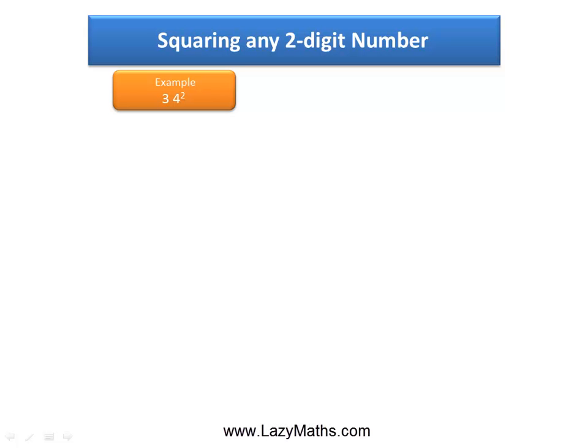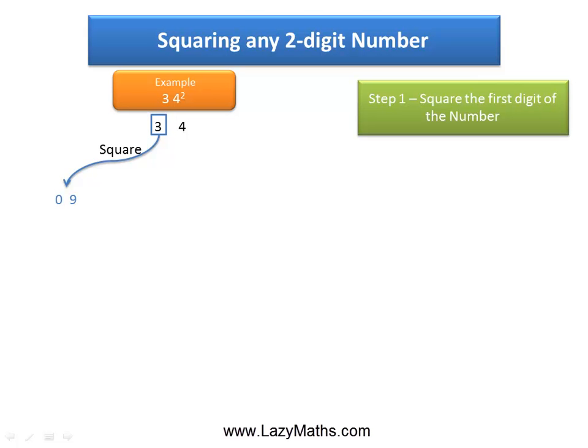Here's another example of squaring a two-digit number: 34 squared. The first step is to square the first digit of the number, in this case 3. 3 squared, which is 3 times 3, equals 9. There's a reason why we write it as 0, 9—I'll come back to that in a bit.